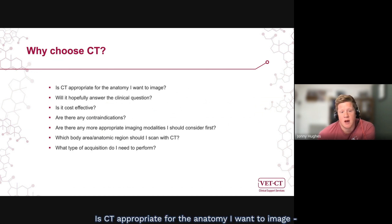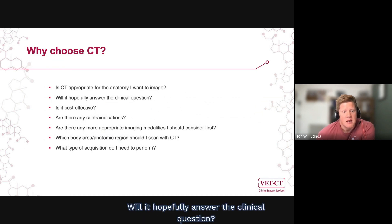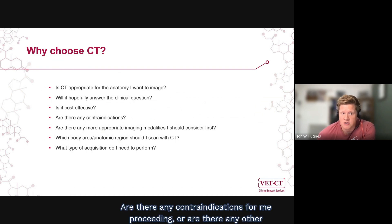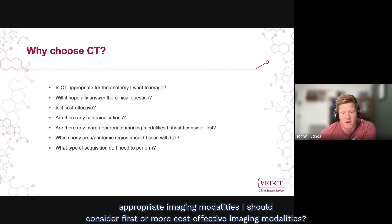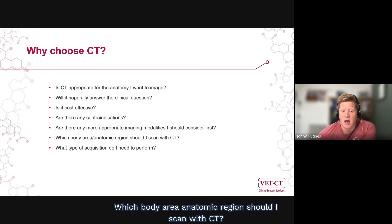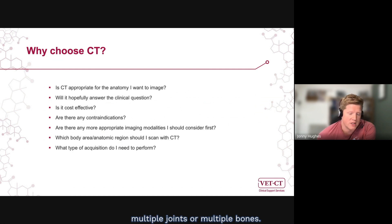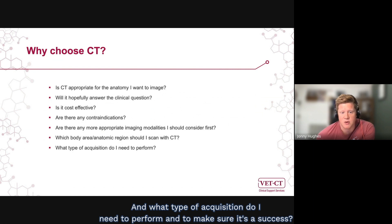Is CT appropriate for the anatomy I want to image — in this case, the musculoskeletal system? Will it hopefully answer the clinical question? Is it cost effective for the client? Are there any contraindications for proceeding, or are there any other appropriate or more cost-effective imaging modalities to consider first? Which anatomic region should I scan, and in the case of musculoskeletal CT, that may be multiple joints or multiple bones? And what type of acquisition do I need to perform to make sure it's a success?